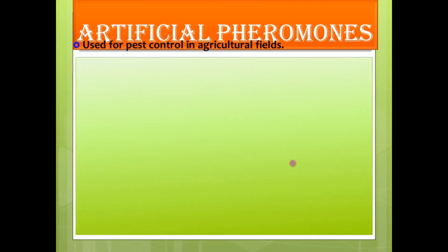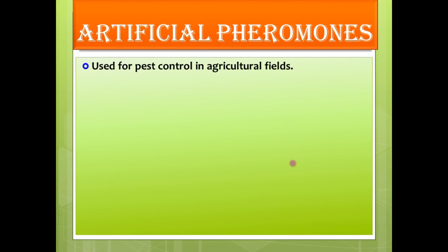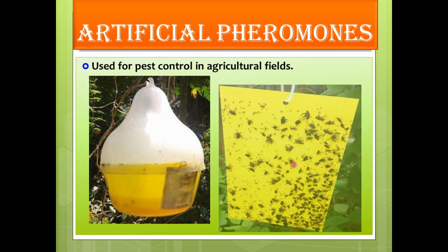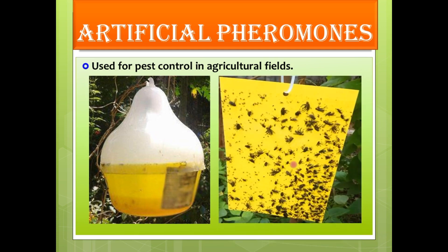Moving to the next topic — artificial pheromones. Artificial pheromones are widely used as a pest control method in the agricultural field. We use pheromone traps, which are artificially synthesized pheromones used in order to attract pests, so that we can control them to a certain extent.